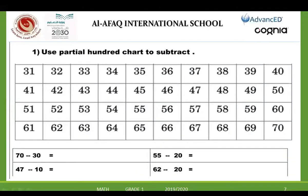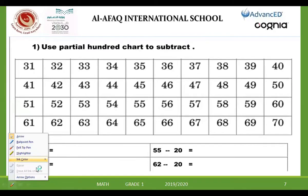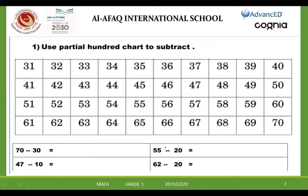Here he asked you to subtract 30 from 70. If you have 70 and take away 30, I start at the greater number. He asked you to use the partial hundred chart. So you stop at the greater number — you want to stop at 70.